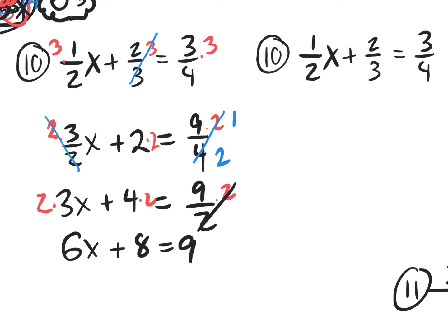I want to pause there because I already know you know how to subtract 8, subtract 8, divide by 6, divide by 6. But I want to go back to the original and get rid of all the fractions at the same time by looking at 2, 3, and 4 and thinking of the lowest common denominator of 2, 3, and 4. If you're not good at finding the LCD, think of the biggest denominator, which is 4. Can you change 2 to become a 4? Yes. Can you change 3 to become a 4? No. So take that biggest one and double it to 8 — can 3 become an 8? No. Triple it: 4 times 3 is 12. Can 2 become a 12? Yes. Can 3 become a 12? Yes. So the LCD is 12.